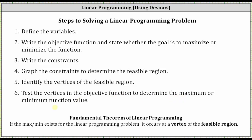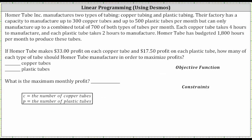Let's take a look at our example. Homer Tube Incorporated manufactures two types of tubing: copper tubing and plastic tubing. Their factory has a capacity to manufacture up to 300 copper tubes and up to 500 plastic tubes per month, but can only manufacture up to a combined total of 700 of both types of tubes per month.